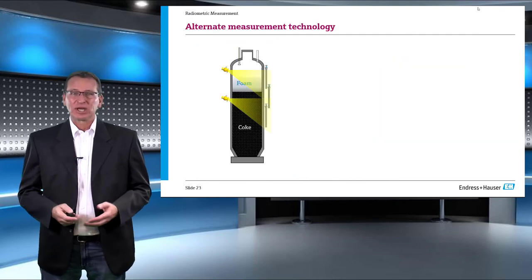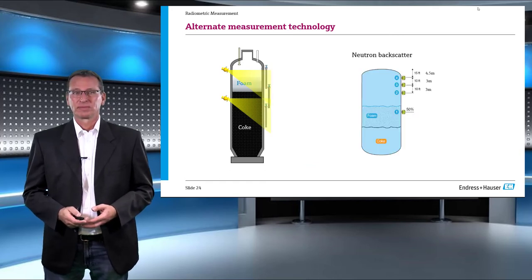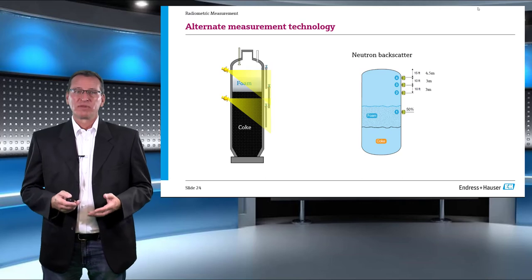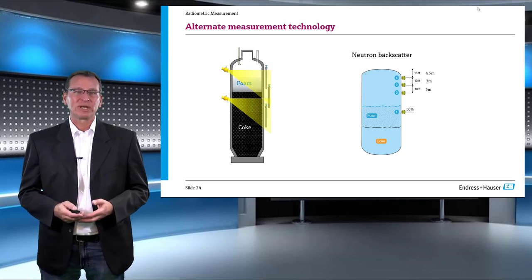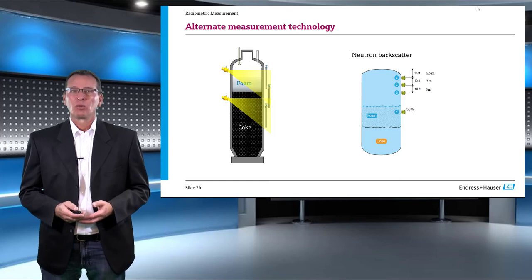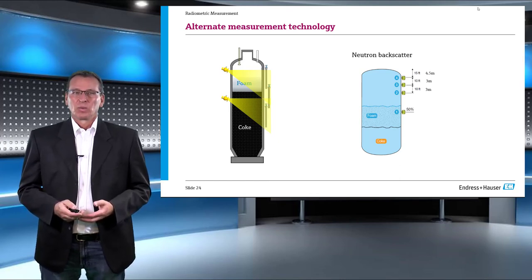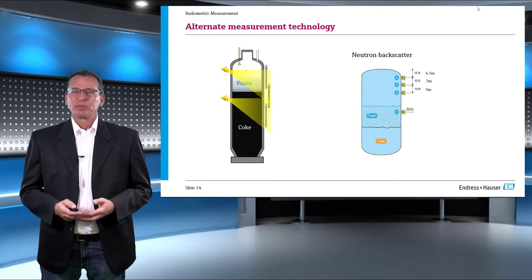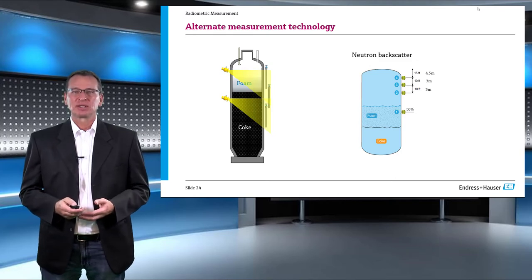Which other measurement technology is possible in a delayed coker unit? One of the most prevalent measurements that was used apart from radiometric level measurement in a coke drum was neutron backscatter. Here we have the schematic representation of both systems. On the right side, you can see 4 neutron backscatters installed on a delayed coker unit.